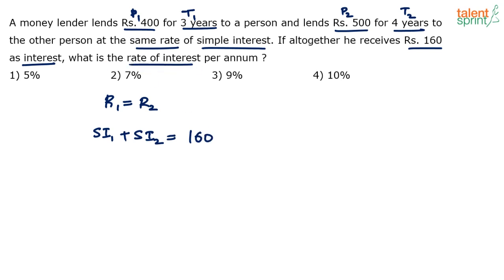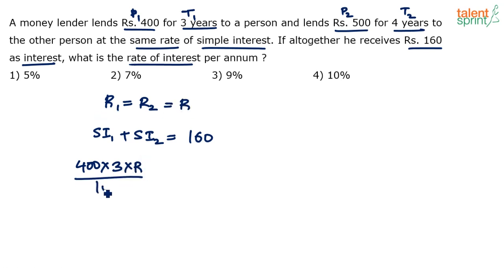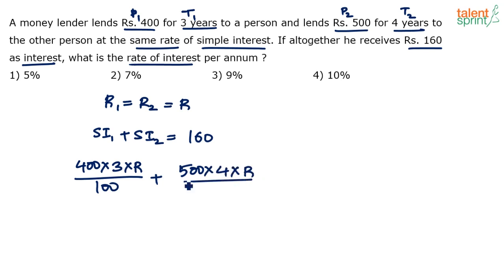SI1 is P1 × T1 × r1 divided by 100, and SI2 is P2 × T2 × r2 divided by 100. Since r1 equals r2 equals r, we get: (400 × 3 × r / 100) plus (500 × 4 × r / 100) equals 160.